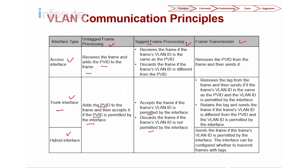During transmission on a trunk interface, if the frame's VLAN ID matches the PVID, the tag is removed and the frame is sent. If the VLAN ID differs from the PVID but is permitted by the interface, the tag is retained and the frame is forwarded with its original tag.